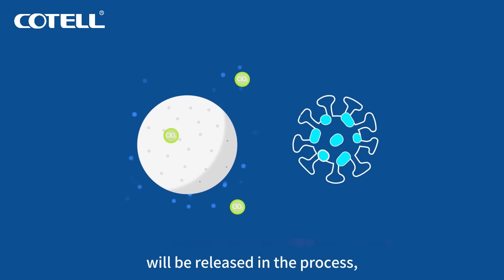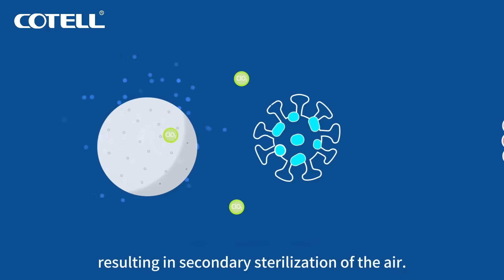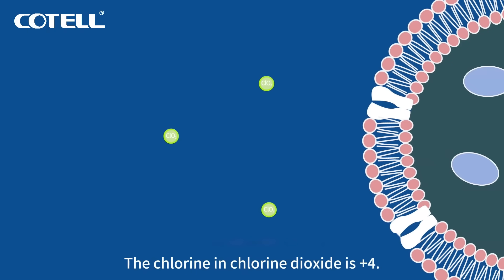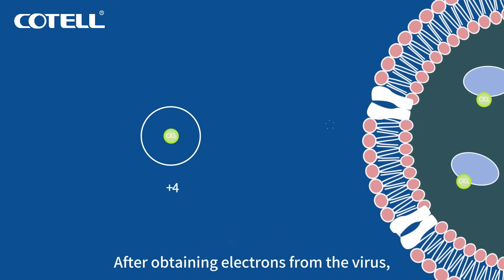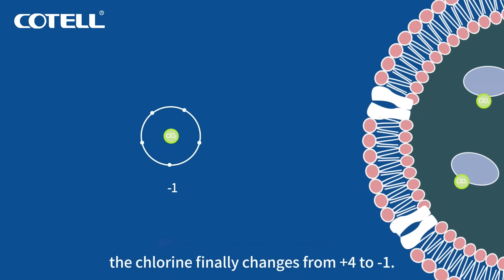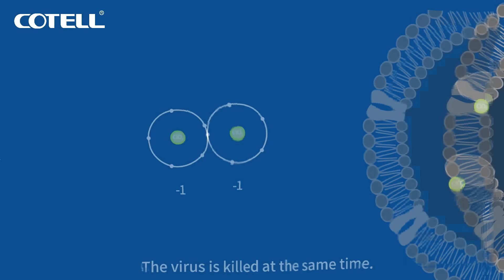Meanwhile, a tiny amount of carbon dioxide will be released in the process, without any secondary sterilization of the air. The current in carbon dioxide is plus 4 — it is also a strong oxidant. After obtaining electrons from the virus, the valence finally changes from plus 4 to minus 1, and the virus is killed at the same time.